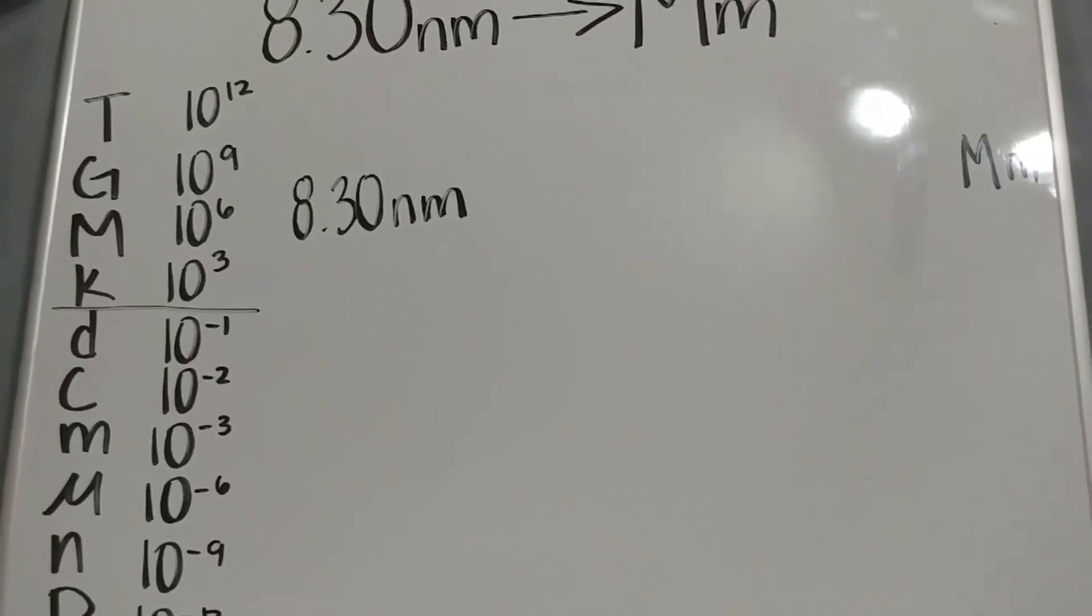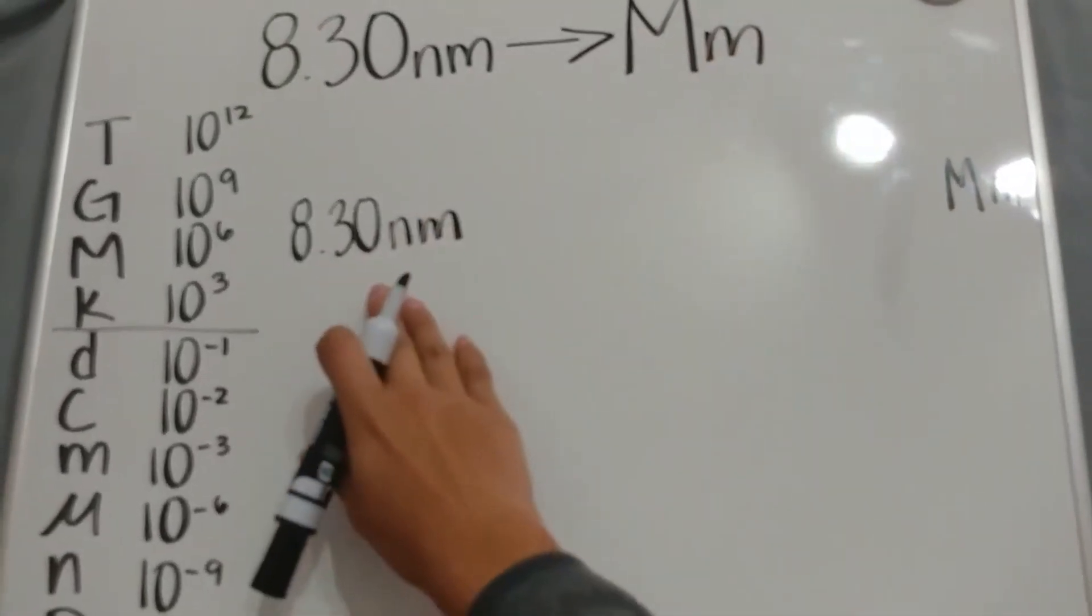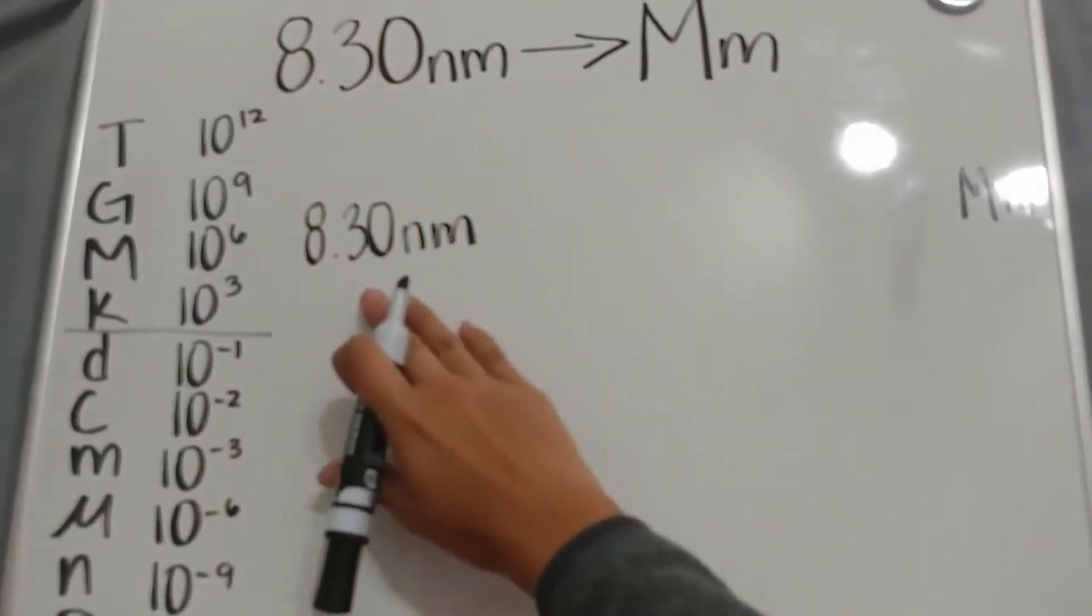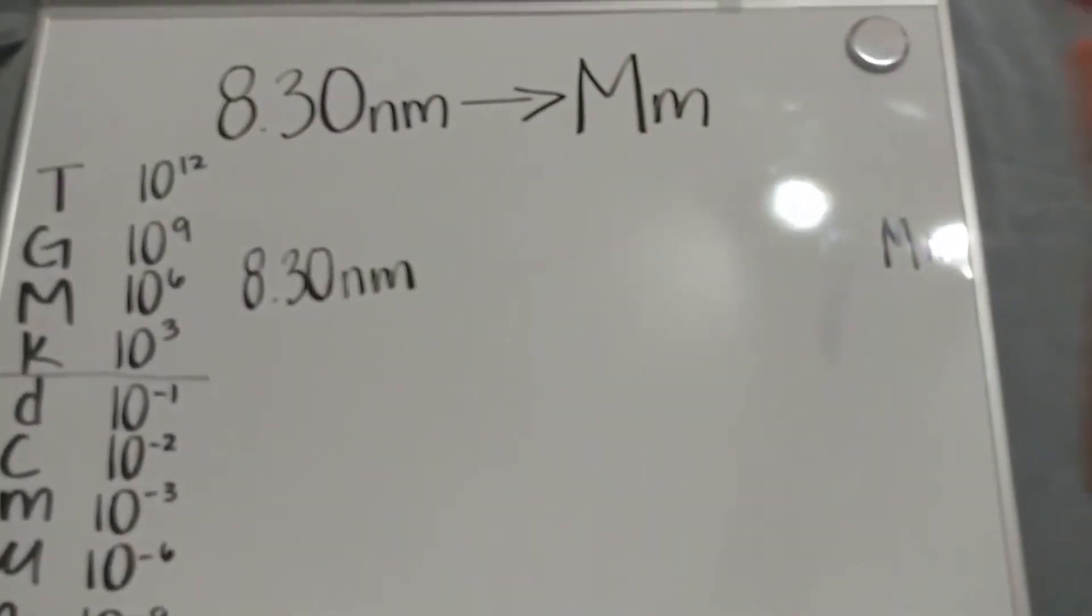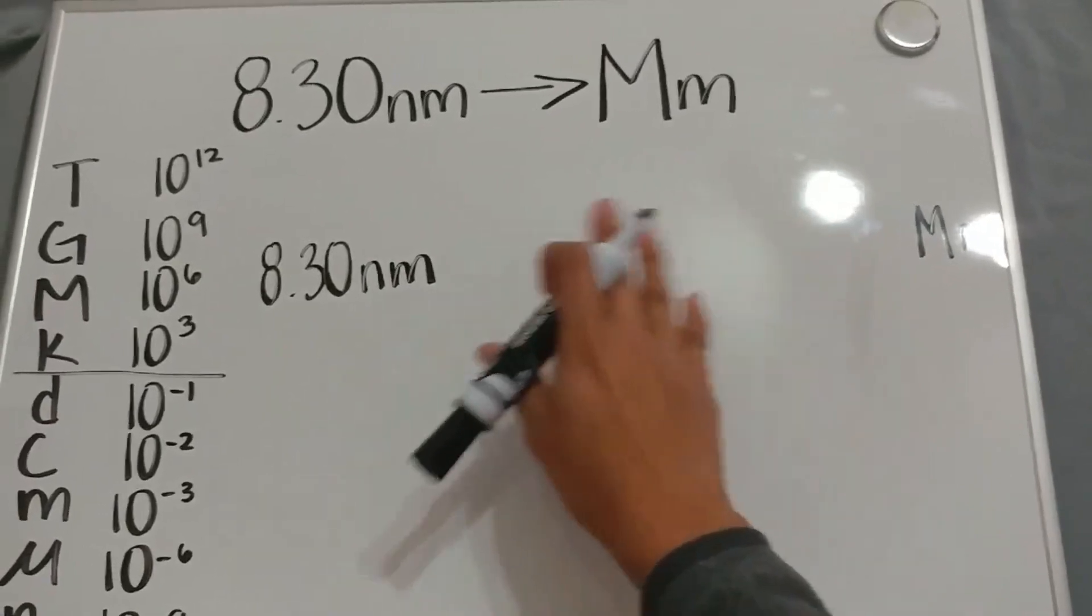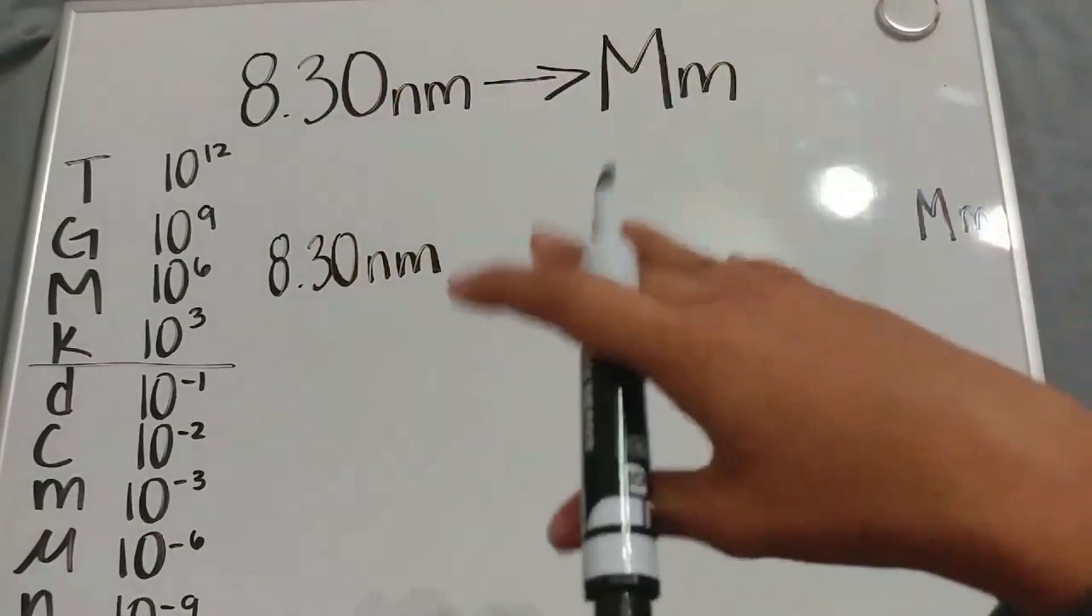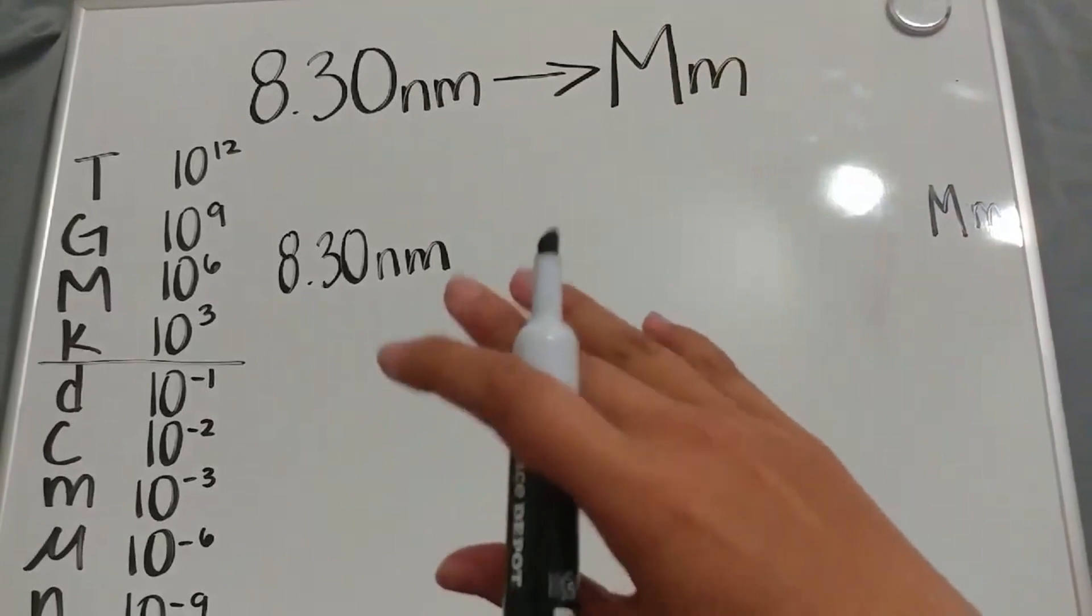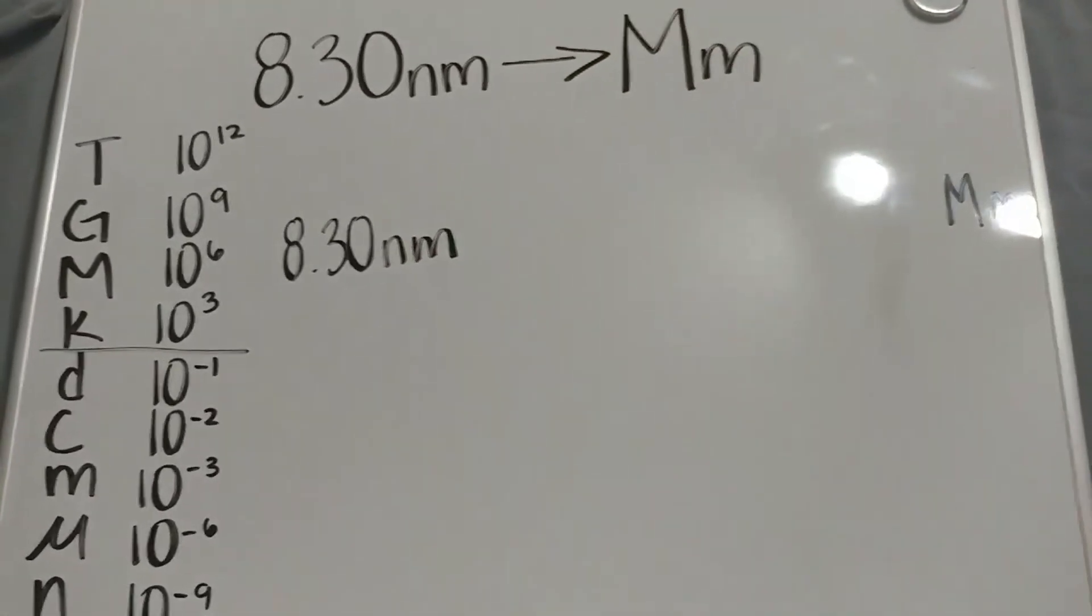So before we begin, I highly recommend writing the number or the initial value that you have at first, and then writing the unit that you want to find at the end so you can make sure that you're properly crossing out any conversions, or if you can see if you're missing any conversions.